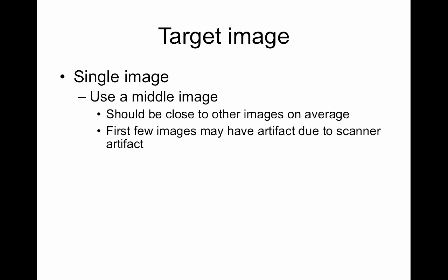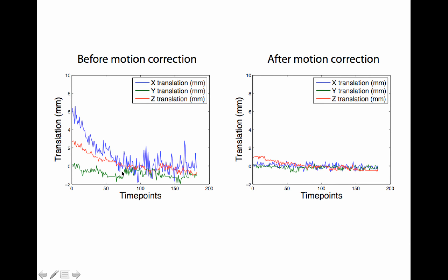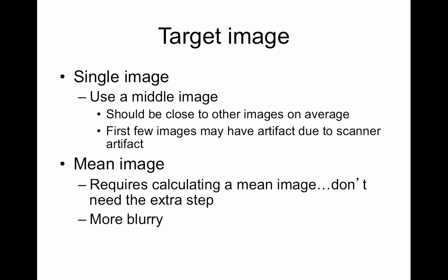What should the target image be? Just because FSL uses the middle image doesn't mean it's the best, but one reason it's nice is because it's closer to other images than if you chose the first image. If you choose your reference in the middle, there are more data points that are similar to it. You could use the mean image, but that requires an extra calculation step and can be a little more blurry. Also, the other reason you use the middle image instead of the first is because of scanner warm-up artifact in the first images — though those should already be removed from your data.